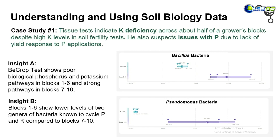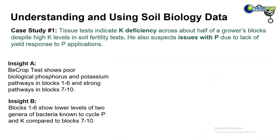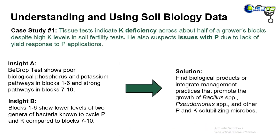Blocks seven through ten are shown in purple. Bacillus and Pseudomonas — two genera heavily studied and known to include bacterial species that solubilize P and K — sure enough had lower populations in blocks one through six where we saw lower functioning, compared to blocks seven through ten with higher functioning. This isn't to say there weren't many other bacterial and fungal species driving this change — mycorrhizae also play an important role in phosphorus release and uptake. But this gives the grower a starting point to find an inoculant or management practice that can help support these populations of P and K solubilizers.